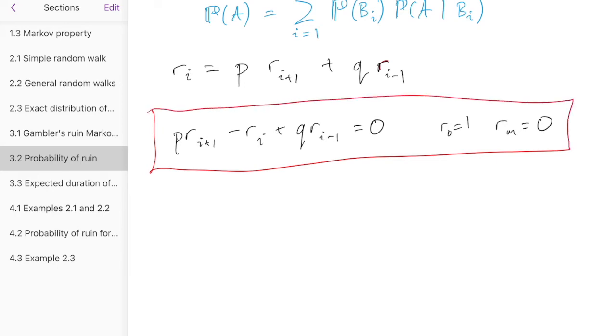Now that is actually called a linear difference equation. You might have come across linear difference equations before. You might not have done. In particular, this one has a 0 on the right-hand side here. So it's called a homogeneous linear difference equation. And we're going to find out in the next section, in section 4, how to solve these linear difference equations, if you don't know already.